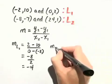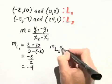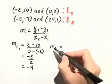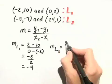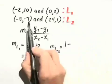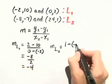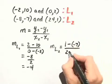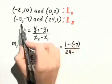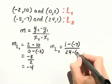Now let's find the slope of our second line and we'll compare them. The slope of L sub 2 is y sub 2, which is 1, minus y sub 1, which is negative 7, over x sub 2, which is 24, minus x sub 1, which is negative 8.